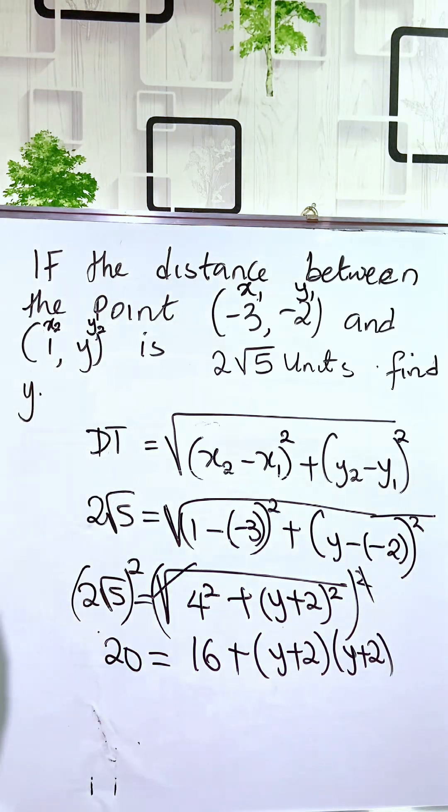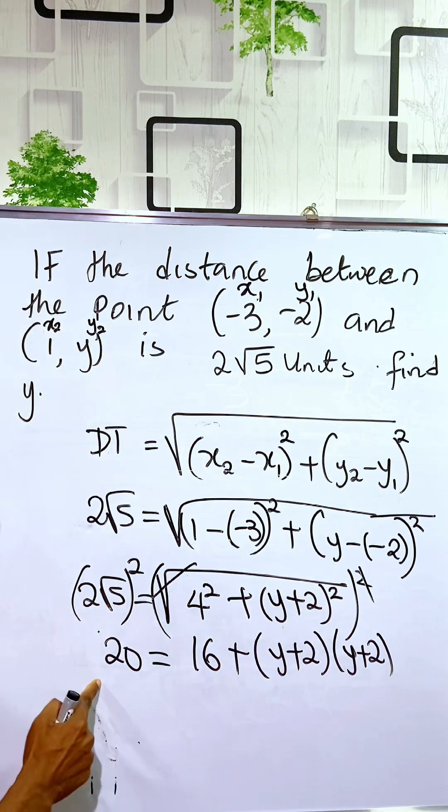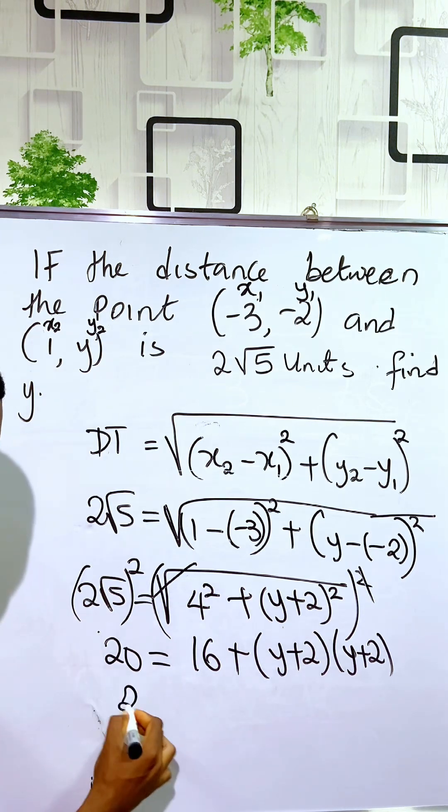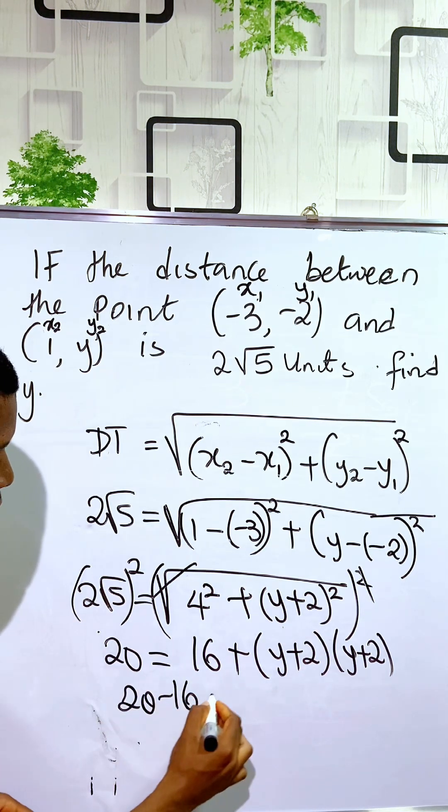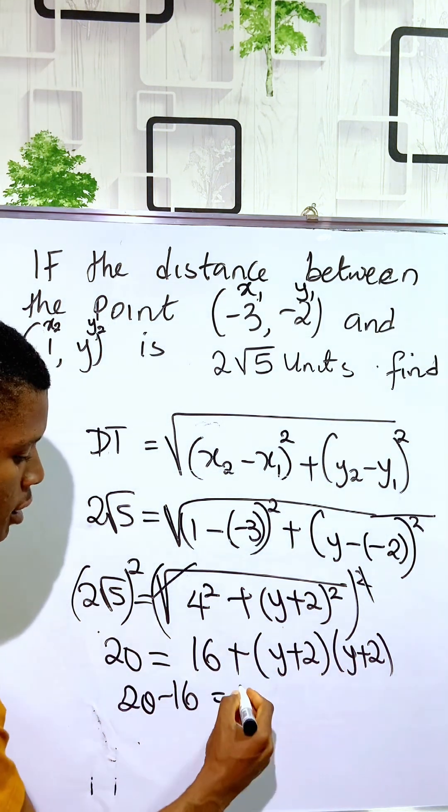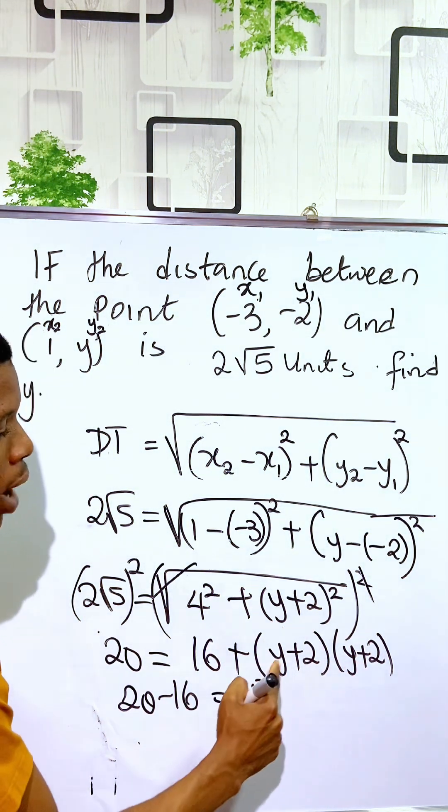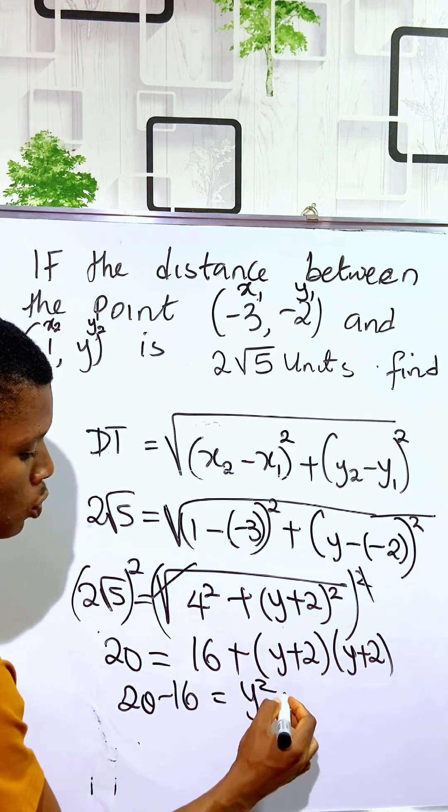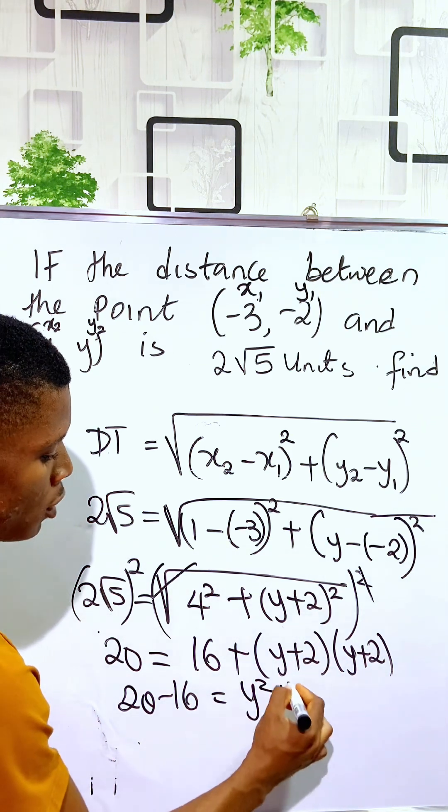So if we simplify, you can now see that we minus 16 from both sides. So here we have 20 minus 16 is equal to, to expand this, y times y is y squared, y times 2 is plus 2y, 2 times y is 2y, 2 times 2 is 4.